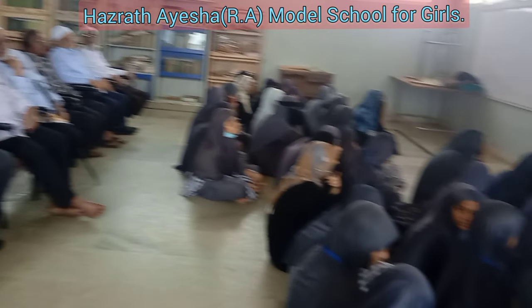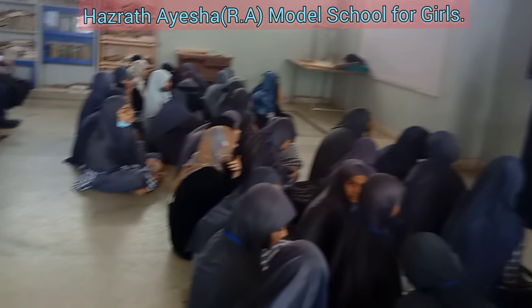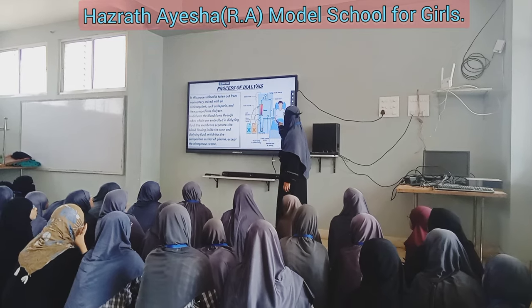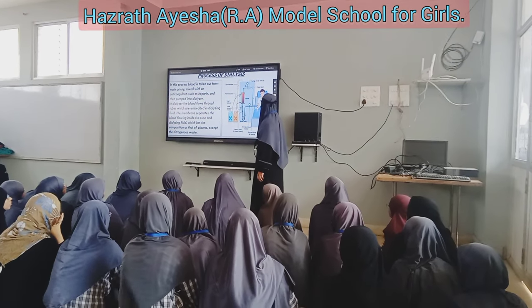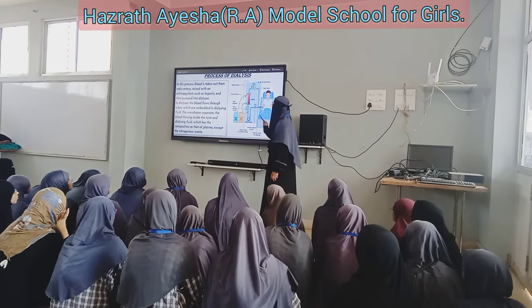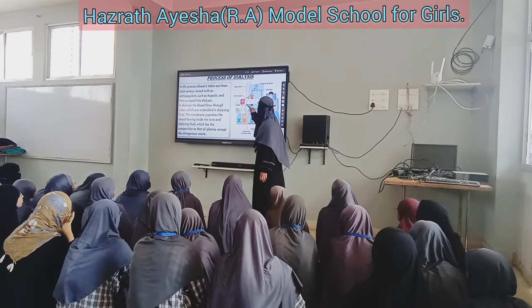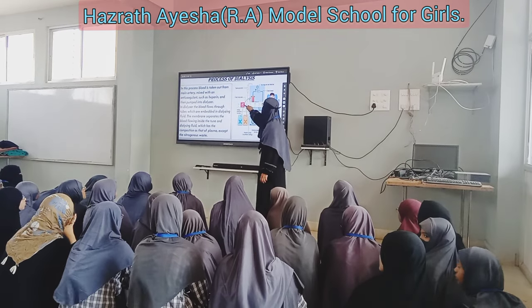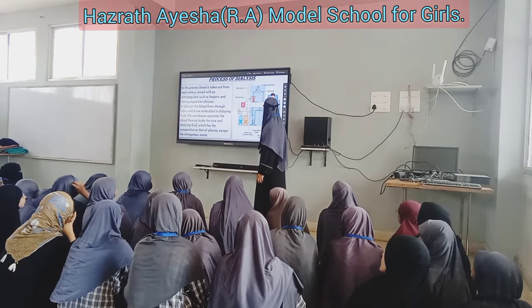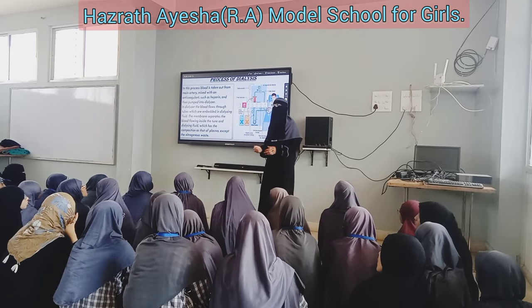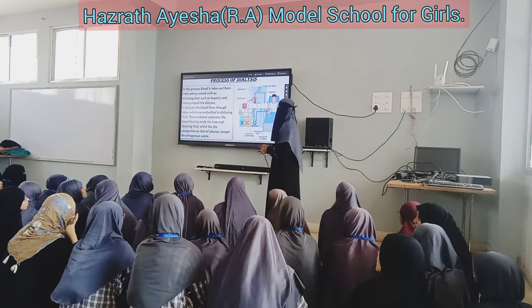Let us see the process of the dialyzer. In this process, blood is taken from the main artery of the uremic patient and mixed with anticoagulants such as heparin. Heparin is used to prevent blood clotting.